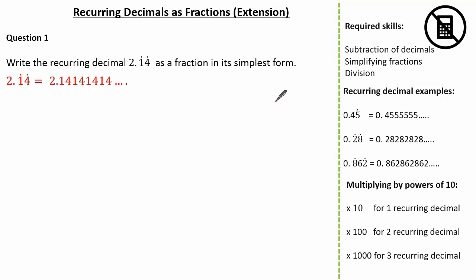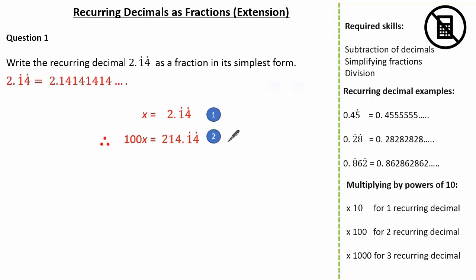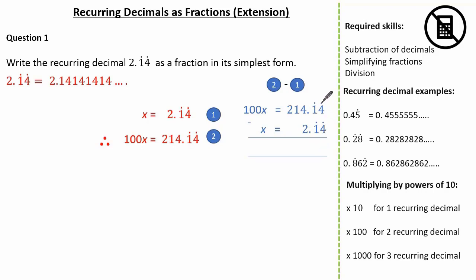Just like we did in the last video, let's identify x to be our recurring decimal. Here, because we have two digits that recur, it's clear to see we multiply by 100. So therefore, 100x equals 214.14. Notice how we've kept to two decimal places because this makes subtraction easy. Now let's label equation 1 and equation 2 and subtract. We know 100x equals 214.14 recurring and x is equal to 2.14 recurring. Those 0.14 recurring subtract from each other give nothing. 4 subtract 2 is 2, 1 subtract 0 is 1, and 2 subtract 0 is 2, giving 99x is equal to 212.